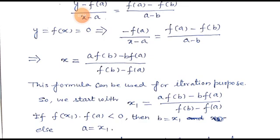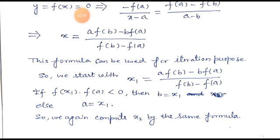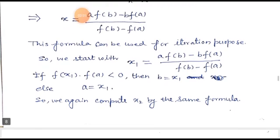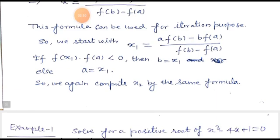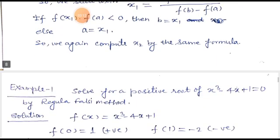If f(x₁) · f(A) < 0, then we set B = x₁; otherwise, A = x₁. We then compute x₂ by the same formula. This is an iterative process — after finding x₁, we find x₂ by the same formula, and continuing these iterations we obtain the required solution.